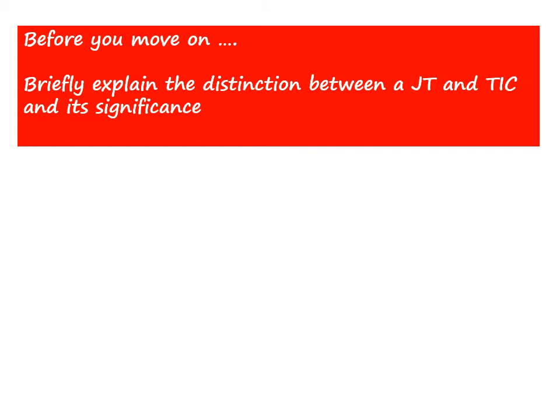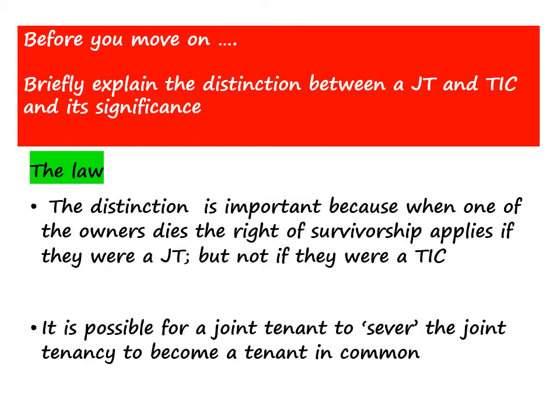I would explain that the distinction is important because in a joint tenancy the owners are not seen as owning a separate share in the land but that they all own it together. And so when one joint tenant dies, ownership of the land passes automatically to the survivors. Whereas in a tenancy in common, each owner is regarded as having a separate share which will pass on their death to the beneficiaries of their estate.